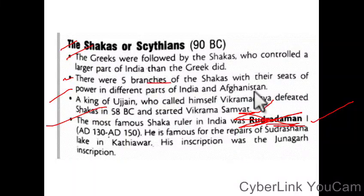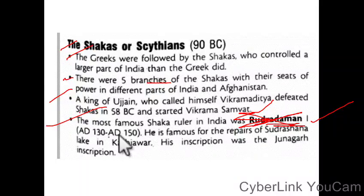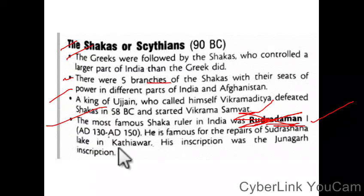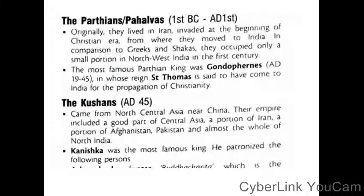There were five branches of the Sakas with their seats of power in different parts of India and Afghanistan. Rudradaman is famous for the repairs of Sudarshana Lake in Kathiawar, and his inscription was the Junagadh inscription.